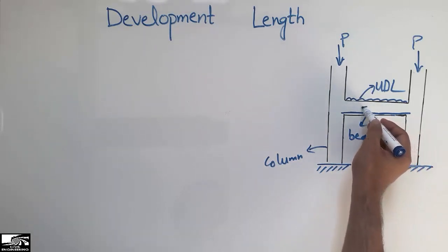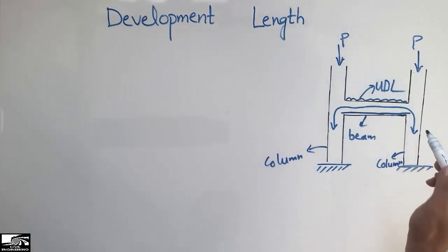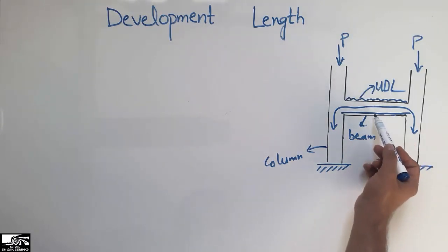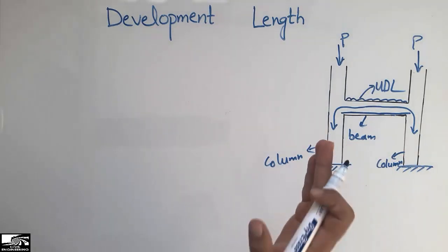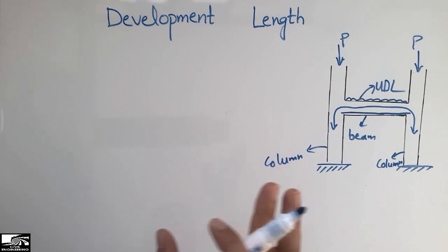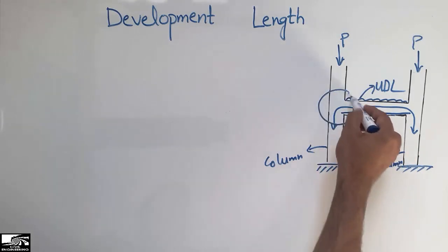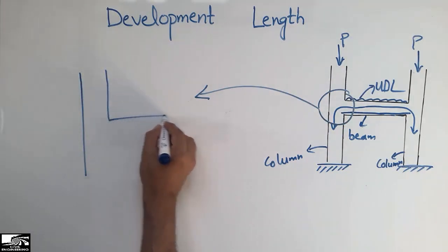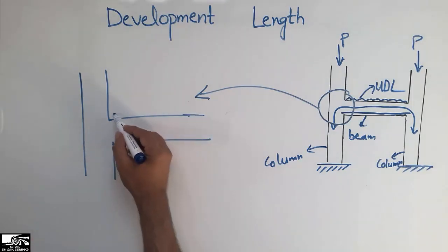To transfer the load from the beam to the column — because the load flows from the beam into the column and is ultimately transferred to the footing — we need reinforcement to connect the beam with the column. We call this a monolithic joint. Concrete is placed at once for both members. Drawing the column-beam joint in detail: this is my column and this is my beam, and due to the load acting on the beam,